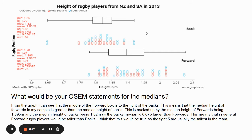From the graph I can see that the forward box is to the right of the backs. This means that the median height of the forwards in my sample is greater than the median height of the backs. This is backed up by the median height of the forwards being 1.895 meters and the median height of the backs being 1.82 meters. If I subtract these, I get a difference of 0.075 meters.